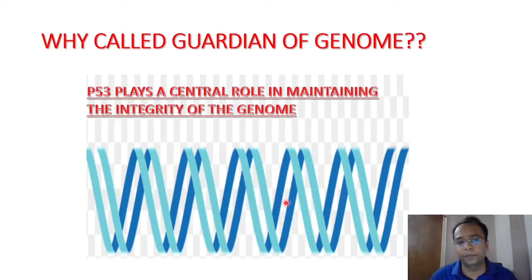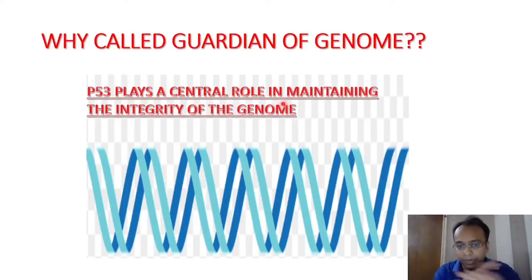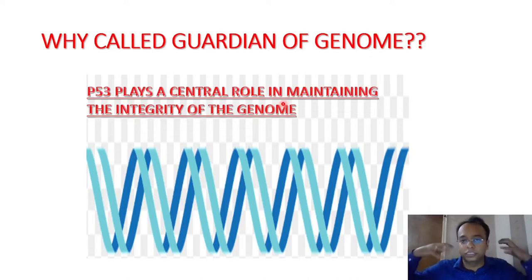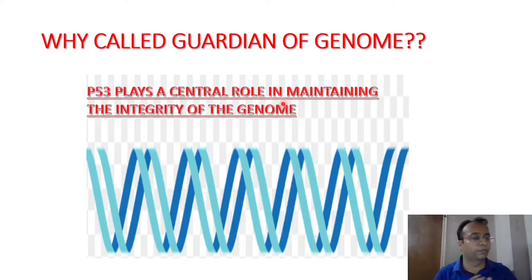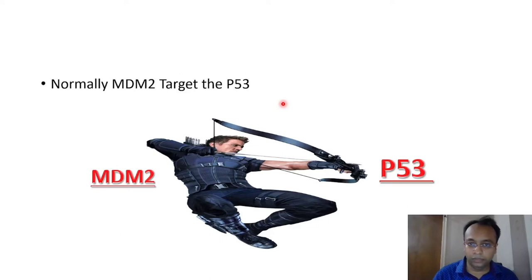P53 plays a central role in maintaining the integrity of our genome. It guards our genome, which is why it is called the 'guardian of genome.' If p53 is mutated, multiple cancers can develop.